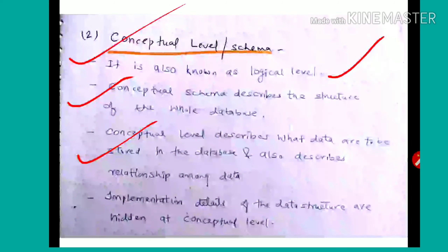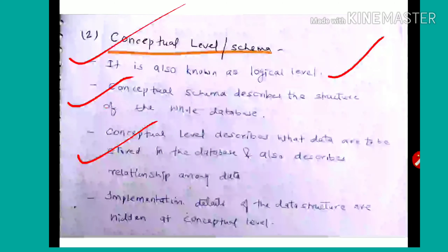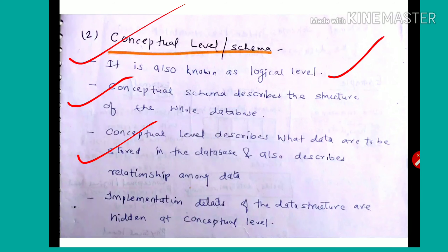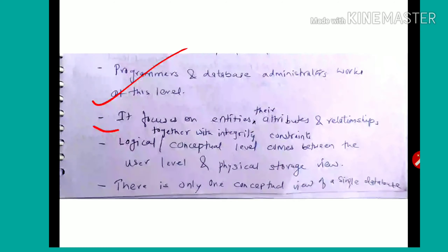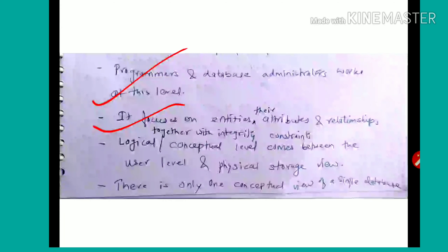The conceptual level describes what data are stored in the database and also describes the relationships among data. Implementation details of the data structures — that is, how data is stored in memory — are hidden at the conceptual level. Programmers and database administrators work at this level. It focuses on entities, their attributes, and relationships together with integrity constraints.